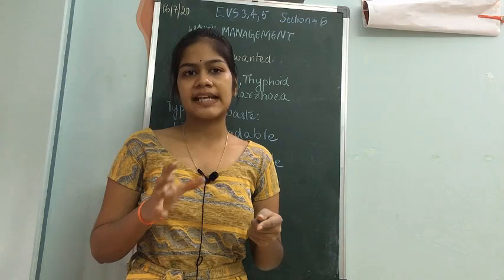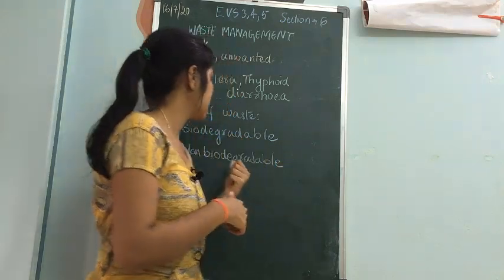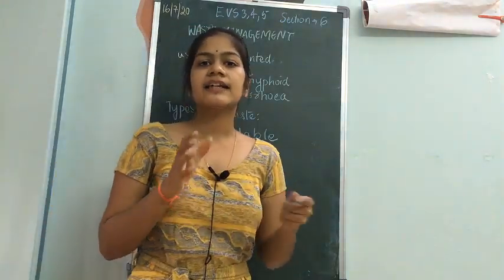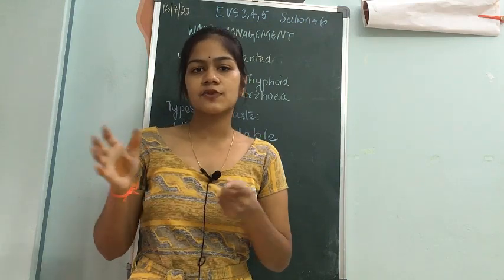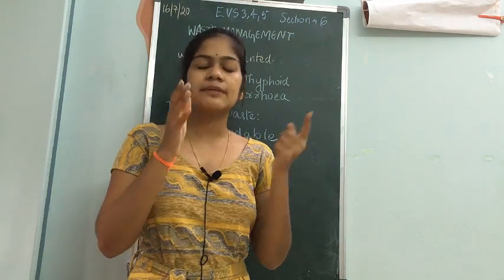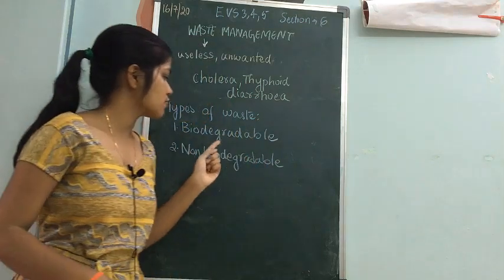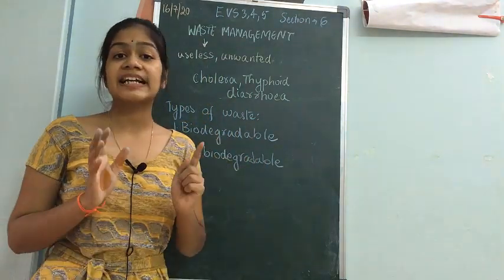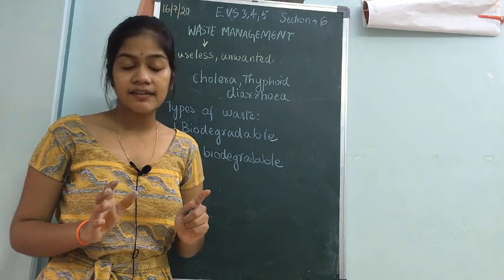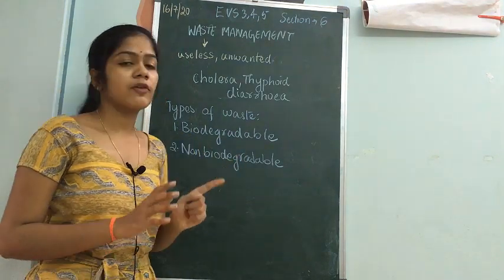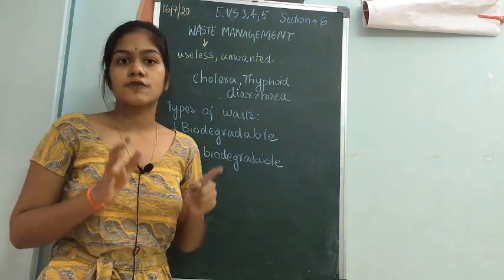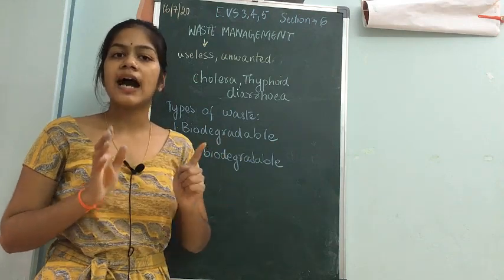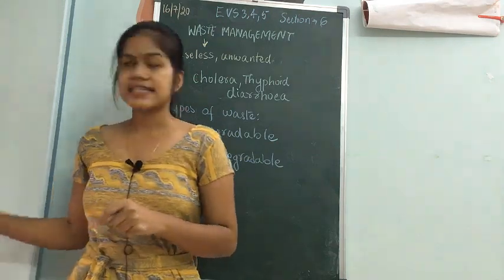Effective methods must be taken to decompose non-biodegradable waste. You should separate biodegradable and non-biodegradable waste. Biodegradable waste should always be kept in a green color bin, and non-biodegradable waste should always be kept in a blue color bin. This helps us easily differentiate between the two.